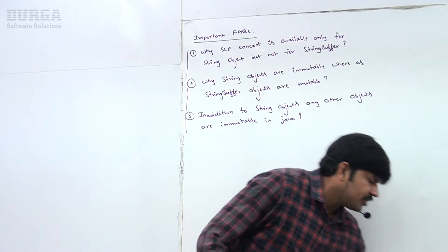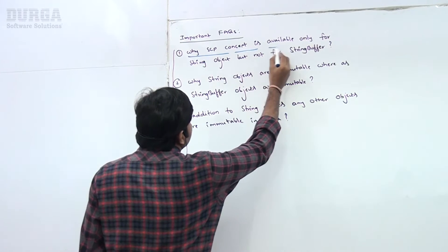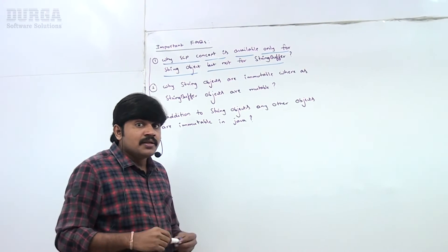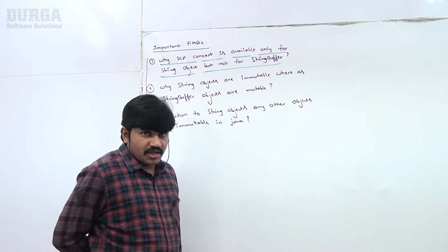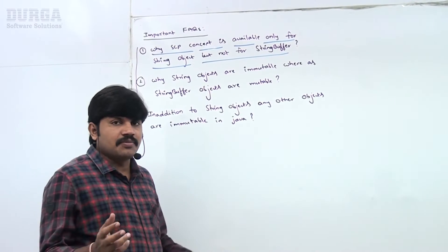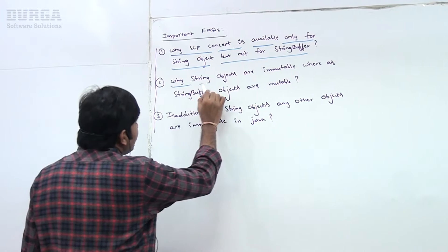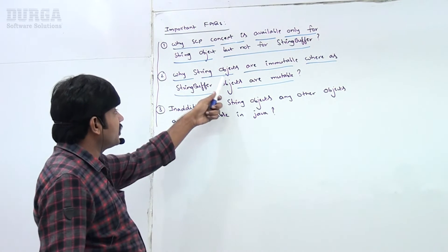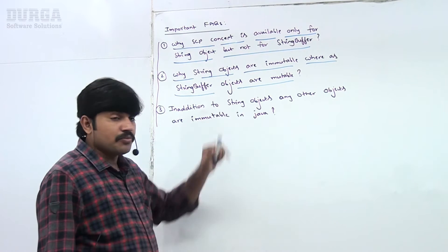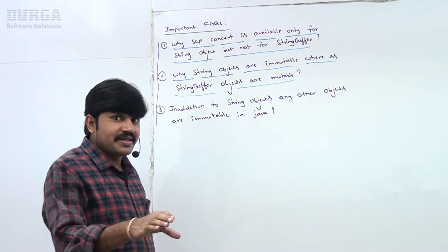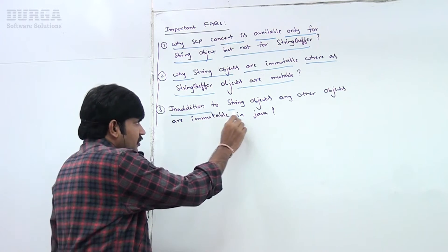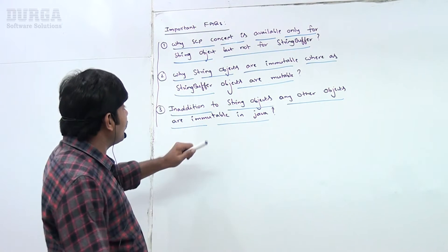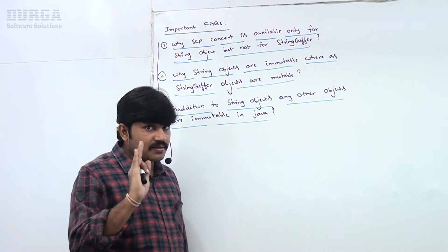The first question: why is the SCP concept available only for string objects but not for StringBuffer? Such type of concept is available only for string but not for StringBuffer — why? The second question: why are string objects immutable whereas StringBuffer objects are mutable? The third question: in addition to string objects, are any other objects immutable in Java? These are the three important questions.